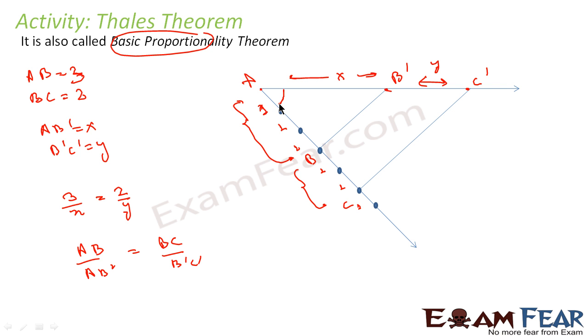For example, this you take 30 degree, you can try with 45 degree, 50 degree, 60 degree. And you take any measurement, instead of one unit you can take two unit also, whatever you want. Every time the lines are parallel, you will always get a, b by b, c is equal to a, b dash by b dash, c dash. And that is what the Thales theorem is.